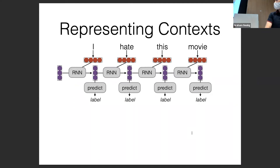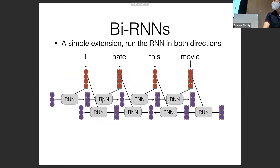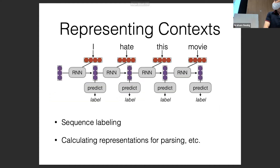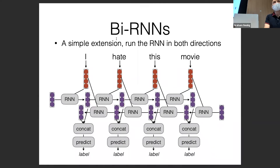RNNs can also represent contexts — making a prediction over labels at each position — useful for sequence labeling, calculating representations for parsing, and other tasks. For context prediction, the most common approach is bidirectional RNNs: run an RNN in one direction, run another RNN in the other direction, concatenate them, and make a prediction.